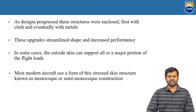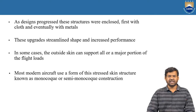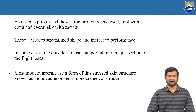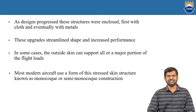As the design progressed, these structures were enclosed first with cloth and eventually with metals in early flight developments. The skin was originally made of cloth or fabric, but as speed and development increased, that didn't sustain, so it was covered by metal sheets. This gave a streamlined shape and increased performance, resulting in a good aerodynamic shape.